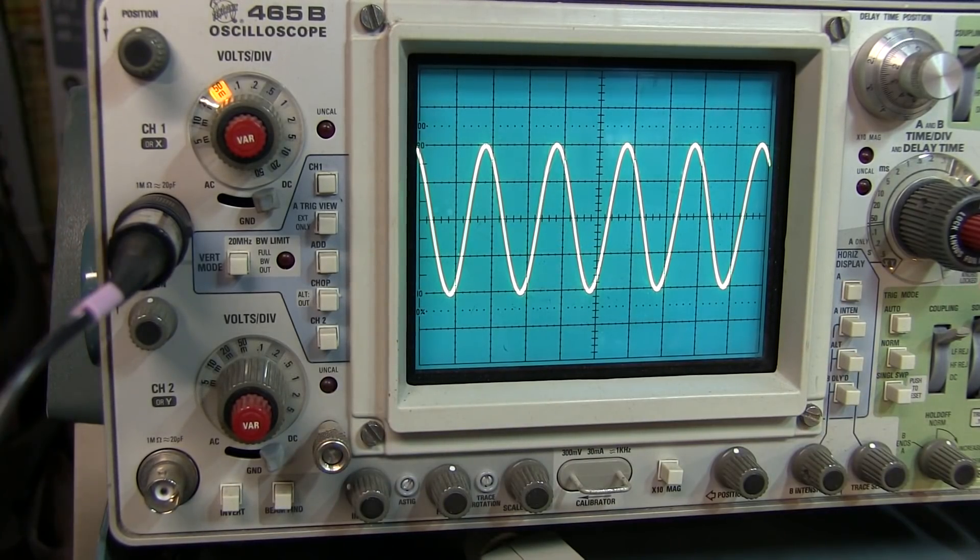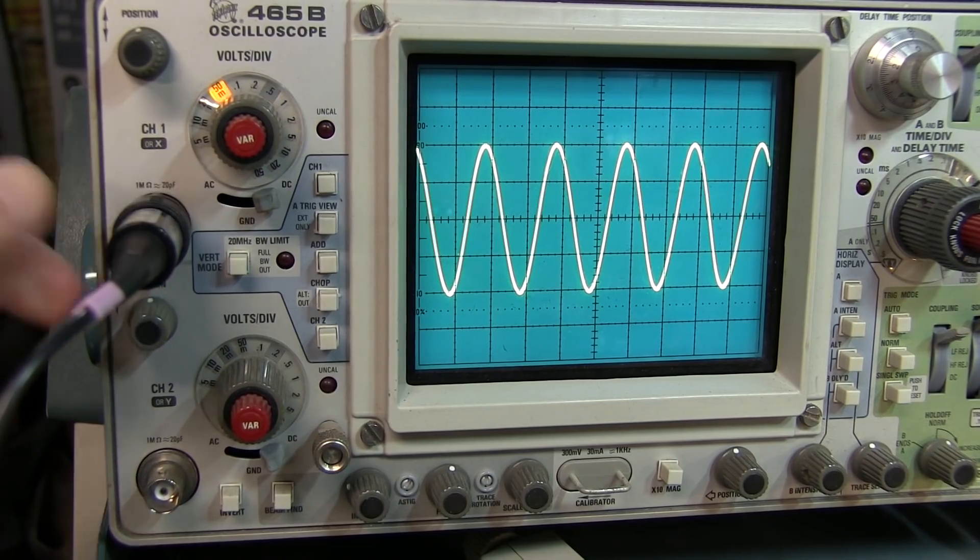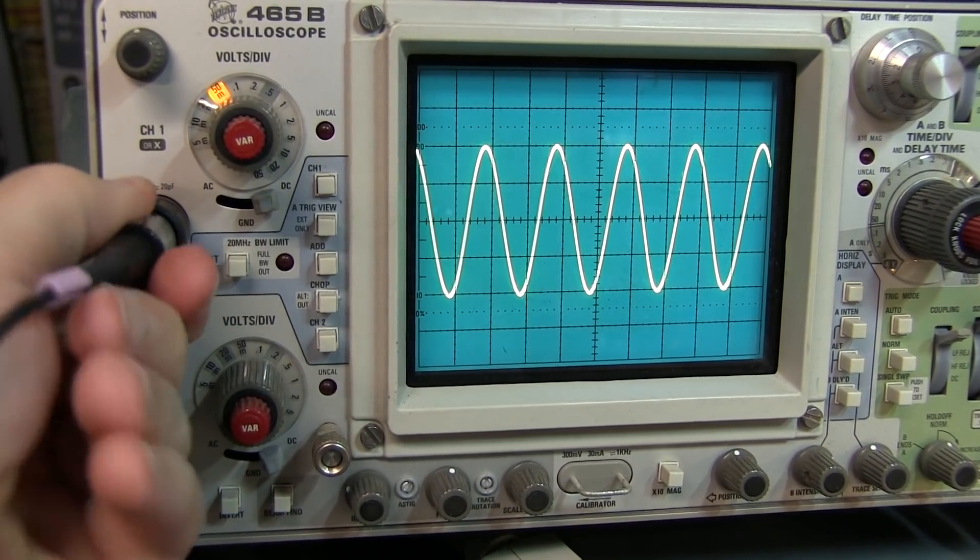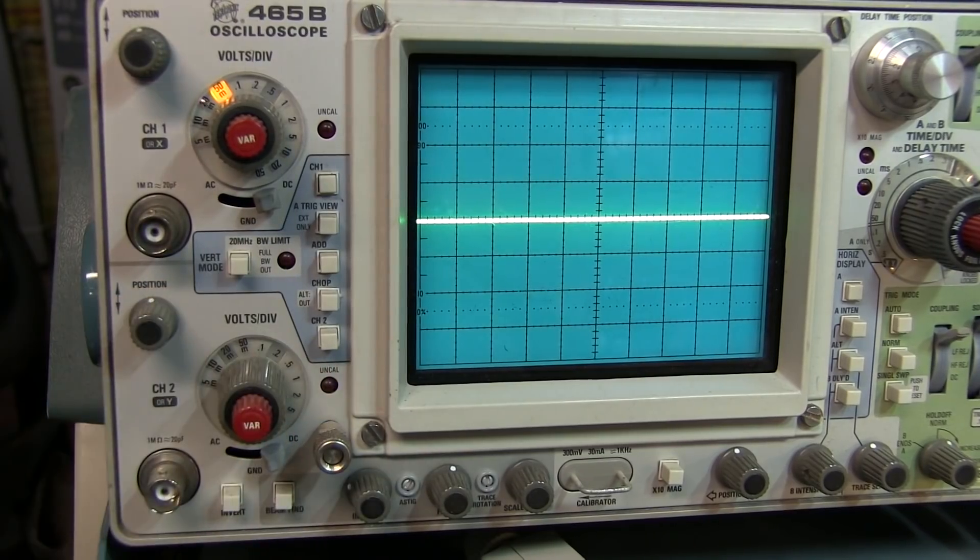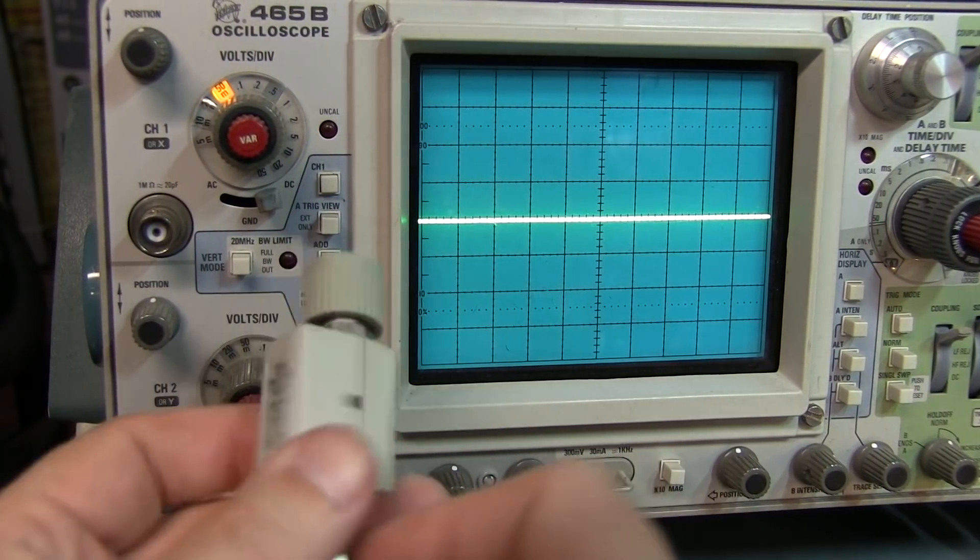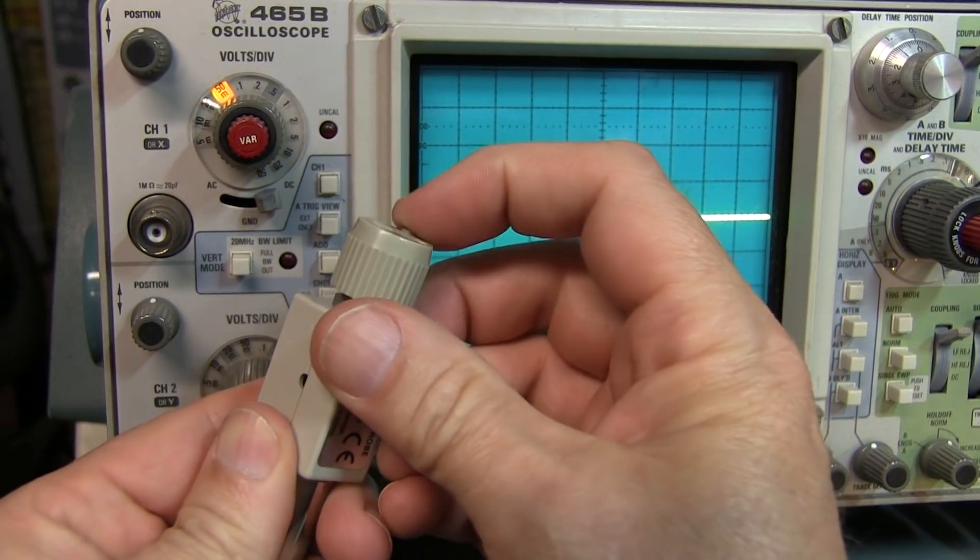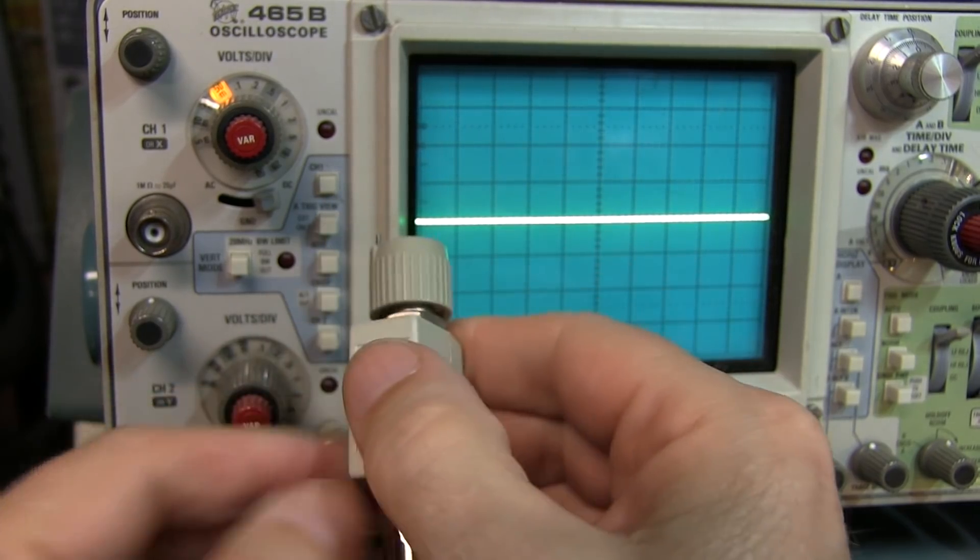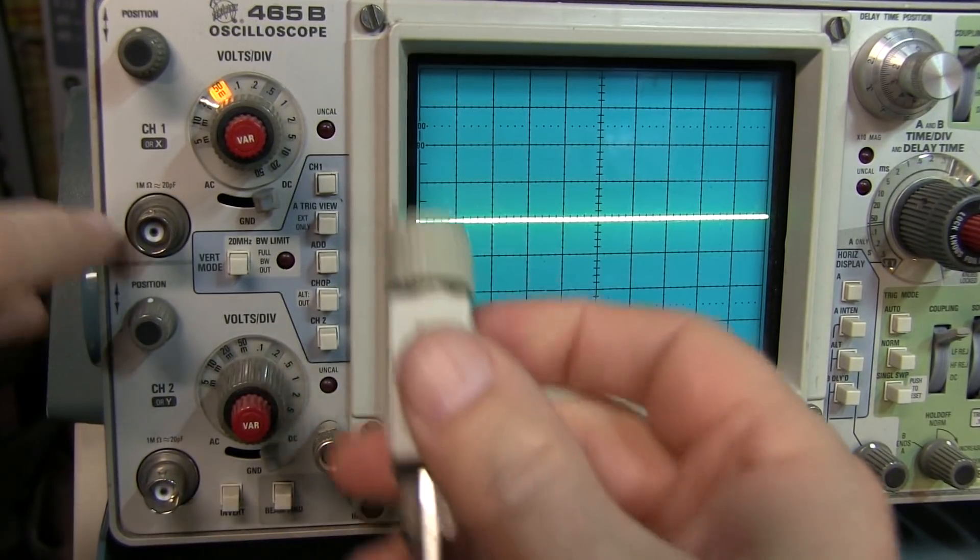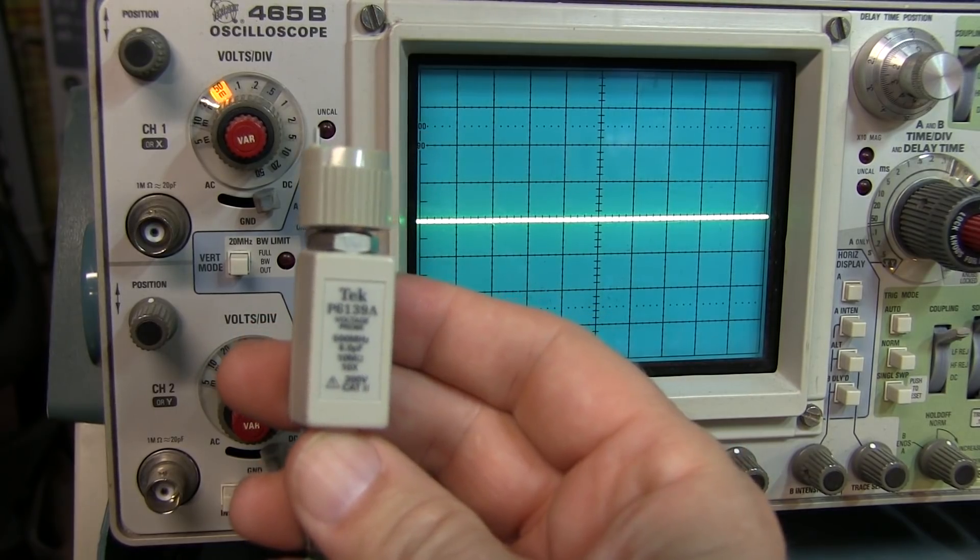Many oscilloscopes and probes don't have a way of communicating the fact that I've got a 10x probe attached. This particular probe does not have any way of telling the scope. It's just a simple BNC connector. There are 10x probes, however, that do have a sense pin that scopes properly equipped, like this one, with a sense ring around the BNC connector, will properly detect a 10x probe.